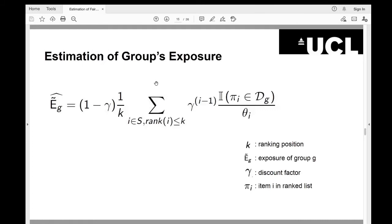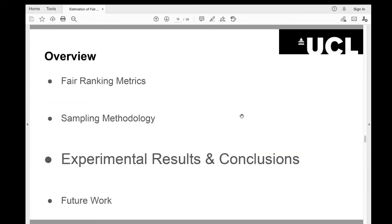On the other hand, we may also use our estimator to compute the group's exposure in ranking k. Here again, gamma is the discount factor. i is the indicator function of group information, binary sensitive attribute. Theta i is the inclusion probability for an item i in sample set S. After having the method, let me continue with our experimental results and then show some conclusions that we get from our research.